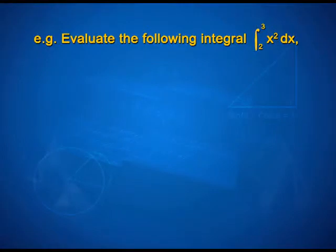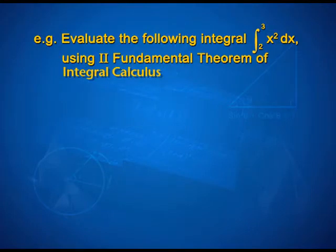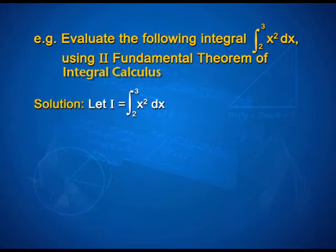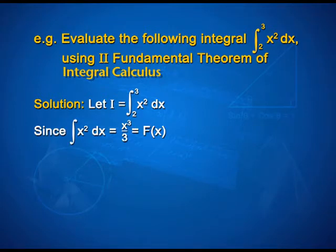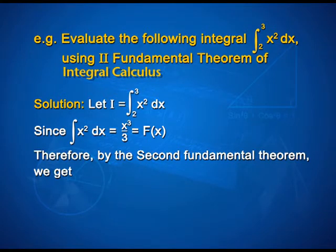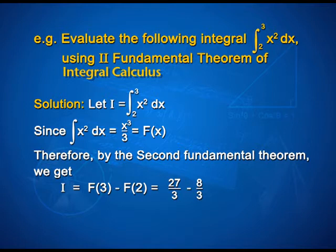Now let us solve some examples using the fundamental theorem of integral calculus. Evaluate the integral from 2 to 3 of x² dx using the second fundamental theorem. Let I = ∫₂³ x² dx. Since ∫x² dx = x³/3 = F(x), by the second fundamental theorem we get I = F(3) − F(2) = 27/3 − 8/3. On solving, we get 19/3 as the answer.